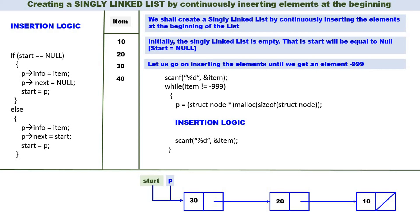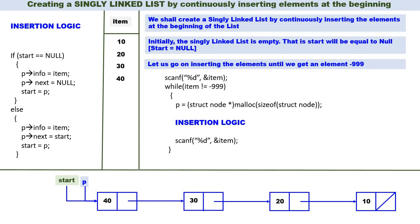Again we read one more item: 40. Go back to the while loop — 40 is not equal to minus 999. Therefore create a new node pointed by P and go to the insertion logic. Start is not equal to null; start contains the address of 30. So go to the else part: P of info is equal to 40, P of next is equal to start, so 40 is connected to 30. Then start is equal to P — we change the value of start, so start now contains the address of node 40. Insertion logic is over.